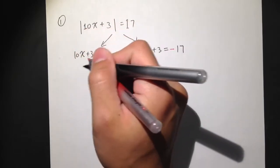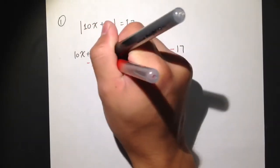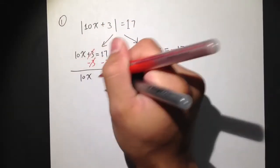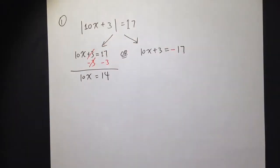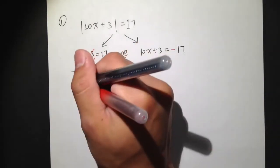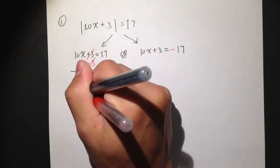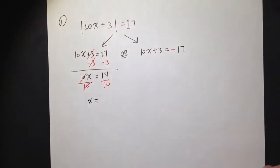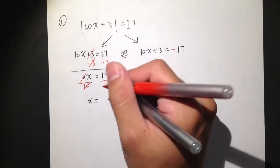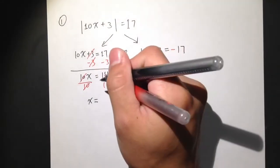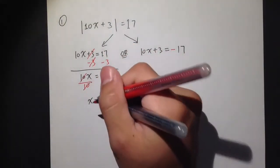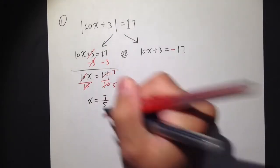For the first equation, 10x plus 3 equals 17 — subtract 3 from both sides, the 3 cancels, and I get 10x equals 14. Divide both sides by 10, and x equals 14 over 10. We can reduce that fraction by 2: 2 goes into 14 seven times and 2 goes into 10 five times. So the first answer is the fraction 7 over 5. It's totally okay to have the answer as an improper fraction.